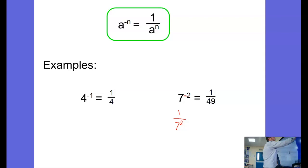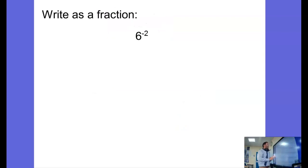Let's look at a couple more examples. So here it says write as a fraction: 6 to the power of negative 2. Let's remind yourself of the rule. So we're going to have 1 over a to the power of n. Here we've got a is 6, n is 2. And so we're going to write it as 1 over 6 squared.